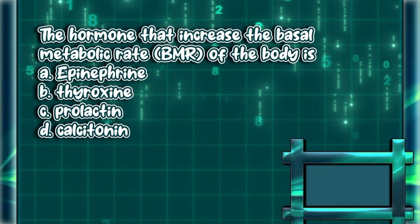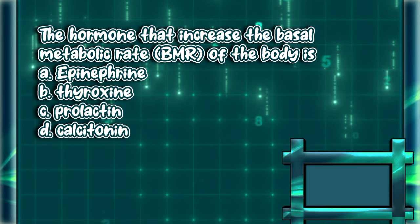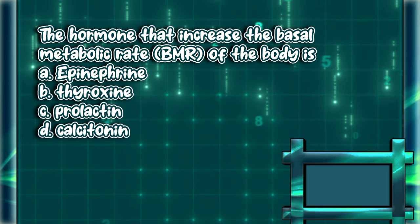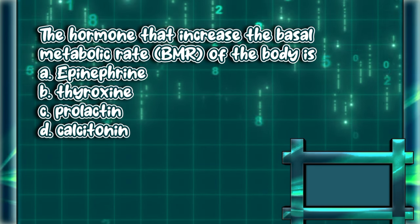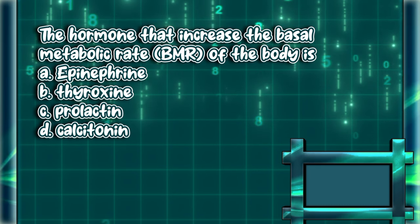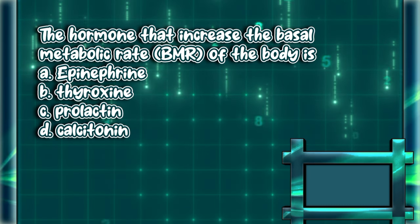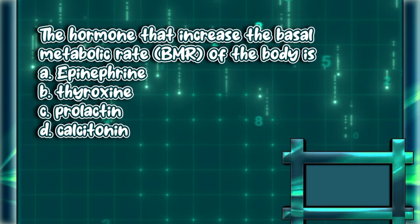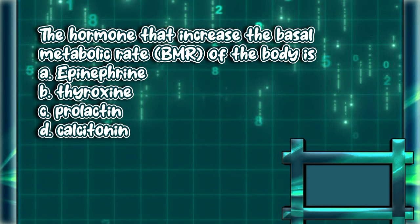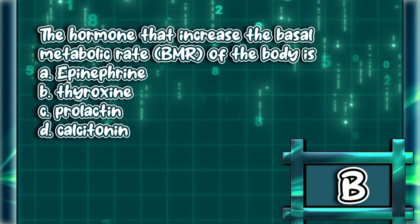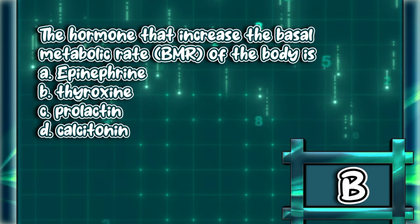The hormone that increases the basal metabolic rate (BMR) of the body is: A. Epinephrine. B. Thyroxine. C. Prolactin. D. Calcitonin. The answer is letter B.